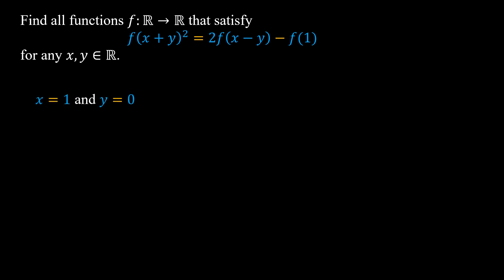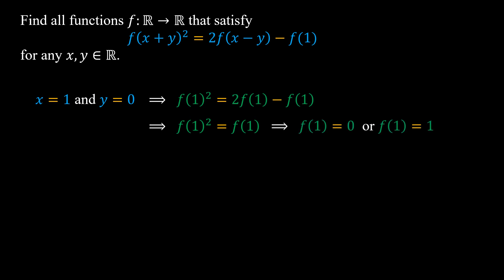First, we try to put x equals 1 and y equals 0 into the functional equation. So we have f(1²) equals f(1) times f(0) minus f(1), which gives f(1)² equals f(1). The only numbers that satisfy this equality are zero and one.